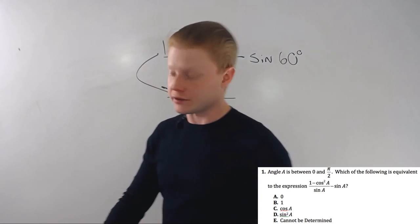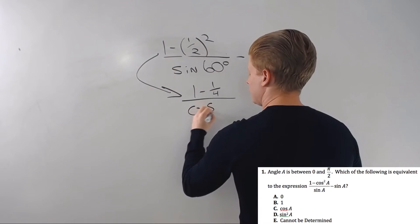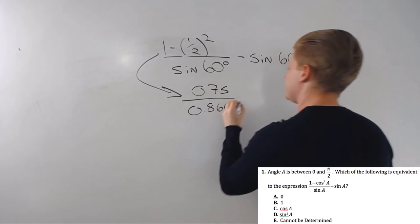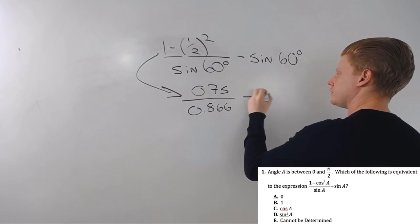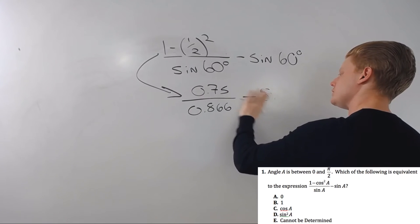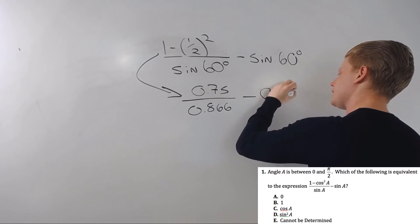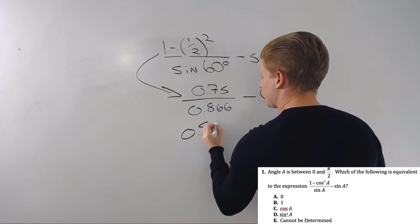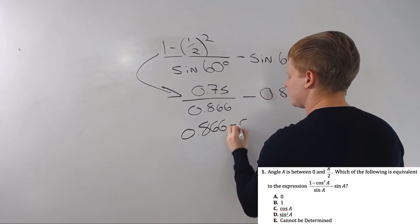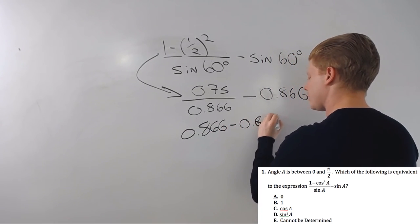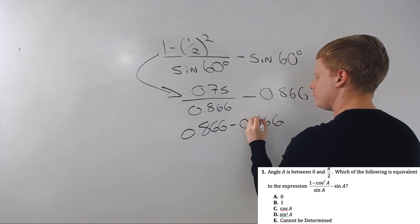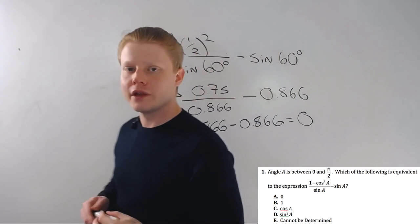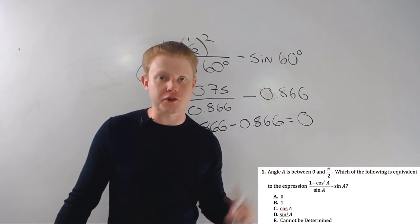Yeah, 0.866. So 0.75 divided by 0.866, subtract 0.866. Well, when I divide these, guess what happens? The quotient, the result of my division, is 0.866. So 0.866 minus 0.866, and I get back to zero that way as well. So it takes a little longer, still very manageable.